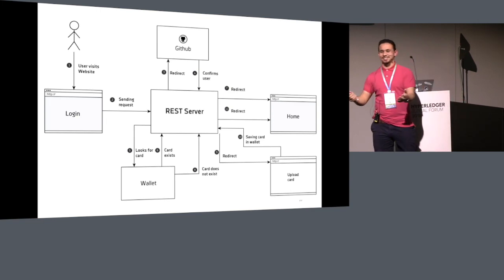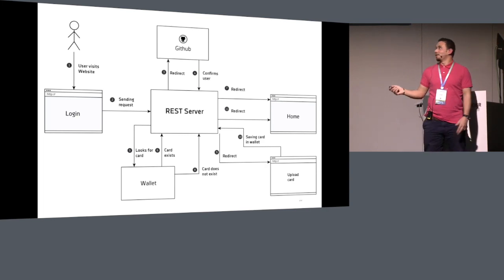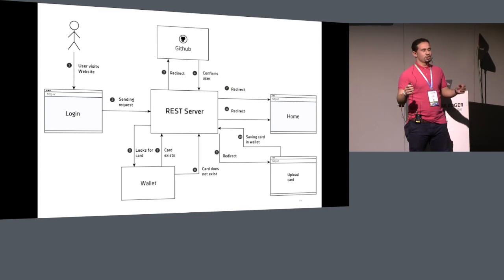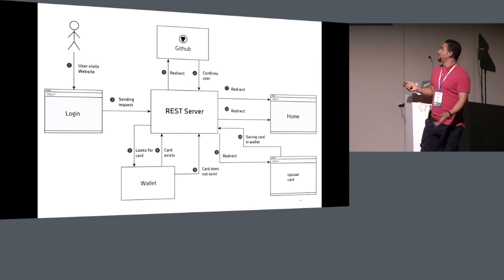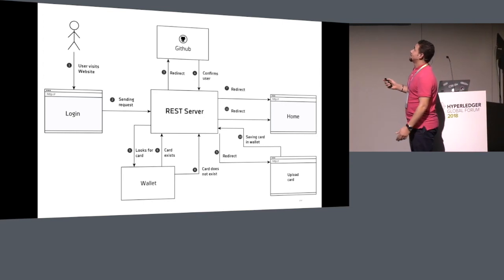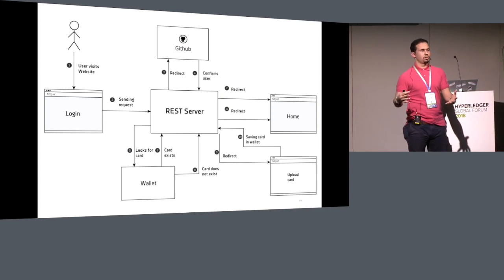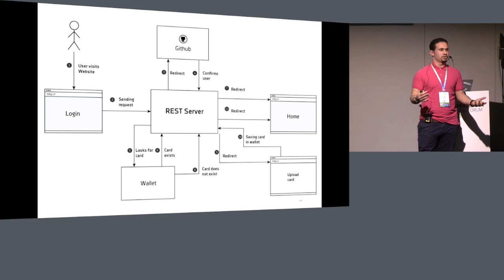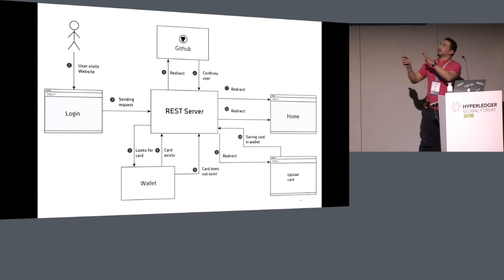When you log in again you don't need to upload the card because it's already in the wallet — it just compares the wallet with the access token from the login service. This is a workaround and I don't like it because it's centralized. This is the only solution we have now; in the future maybe we can replace the CA with Hyperledger Indy. Otherwise everyone should have their own identity on their own wallet and the web browser would need to handle private and public keys — maybe there will be some browser plugins in the future.